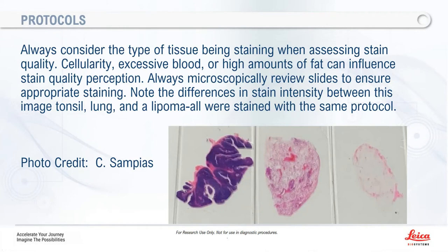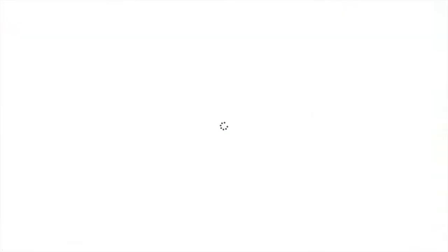For example, a piece of tonsil, a piece of lung, and a piece of fatty breast tissue all look wildly different in how much hematoxylin was picked up. Tonsil is highly cellular with very little cytoplasm, lung has a lot of open spaces so the pink seems minimal, and fatty breast tissue makes nuclei very hard to see. However, all three were stained at the exact same protocol — the cellular components themselves are driving the differences in gross appearance. Always evaluate microscopically.